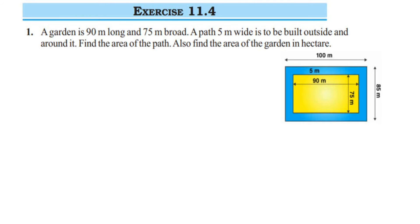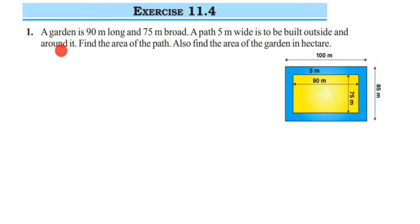Hey everyone, here is a question on exercise 11.4, the first question from the Perimeter and Area chapter of class 7. The question is: a garden is 90 meters long and 75 meters broad. A path 5 meters wide is to be built outside and around it. Find the area of the path, and also find the area of the garden in hectares.